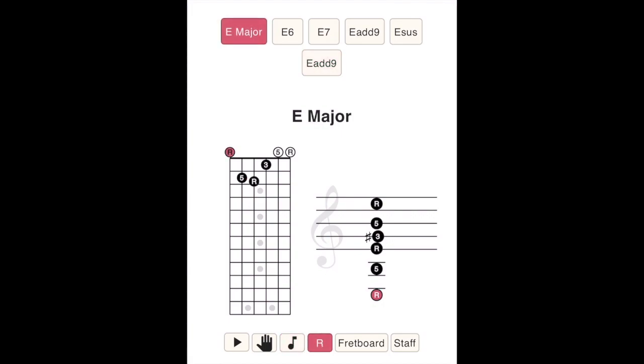We start with a basic E major shape and then use our fourth finger to make an E6, E7, Eadd9, and E-sus.